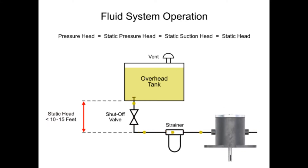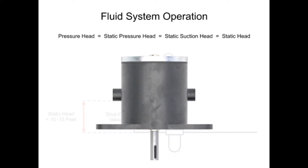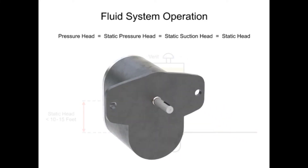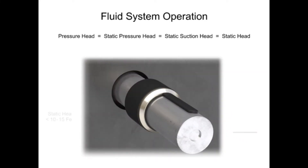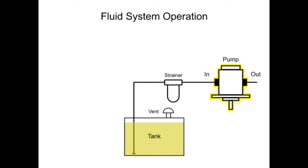If the reservoir is placed too high, the increase in inlet pressure can blow out the shaft seal of most pumps. If the pump is mounted higher than the reservoir, the height from the fluid surface to the pump inlet is called the suction head.